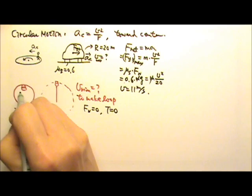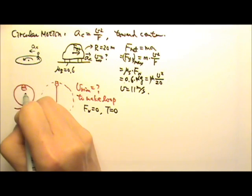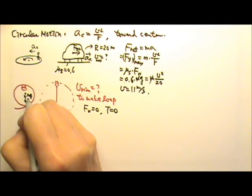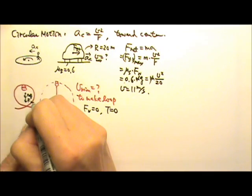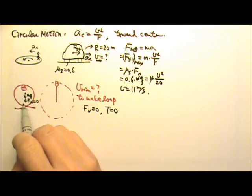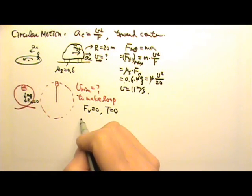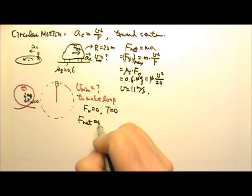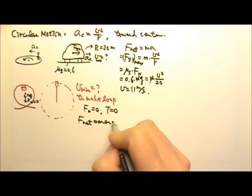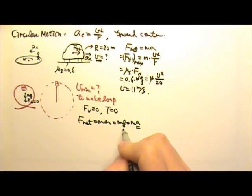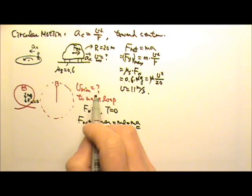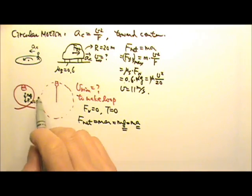If you draw the force diagram for the coaster at minimum speed, only mg acts on it because the normal force is zero. Writing net force equals ma: mg = m × v²/r, which means a equals g. So set g equal to v squared over r to find the minimum speed, given the radius.